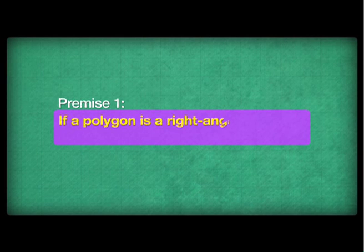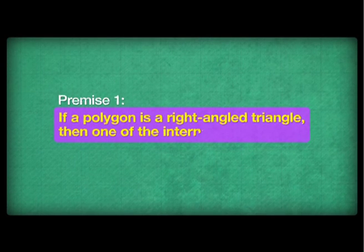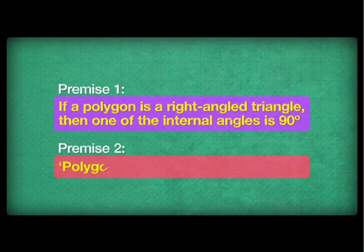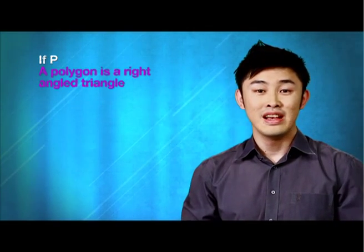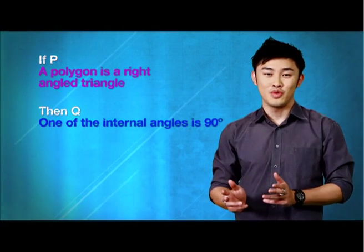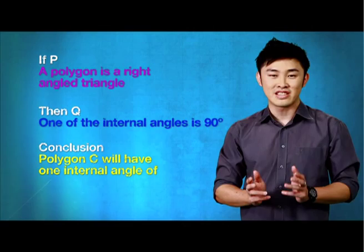Let's take a look at this argument. Premise one: if a polygon is a right-angle triangle, then one of its internal angles must be 90 degrees. Premise two: polygon C is a right-angle triangle. Since polygon C satisfies P, then the implication is Q. Therefore, one of the internal angles of polygon C must be 90 degrees. Now we know that if P is true, then Q is true.